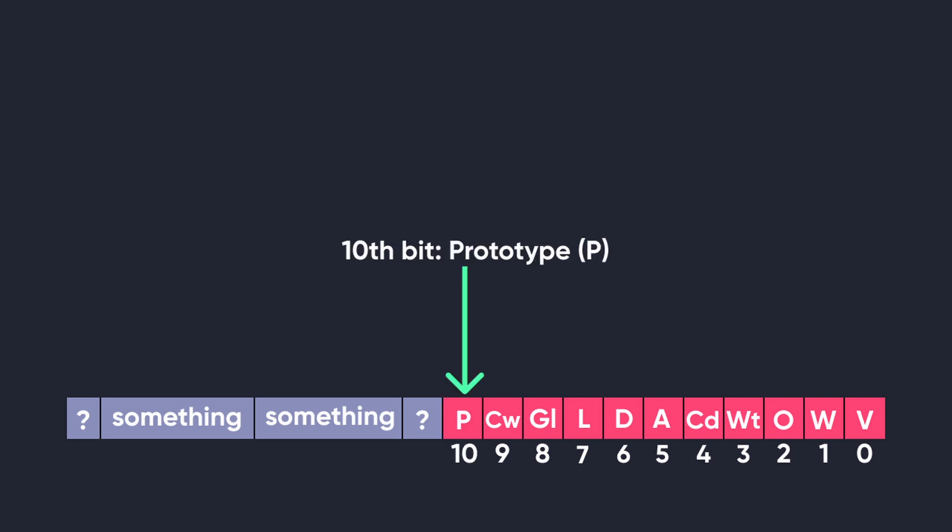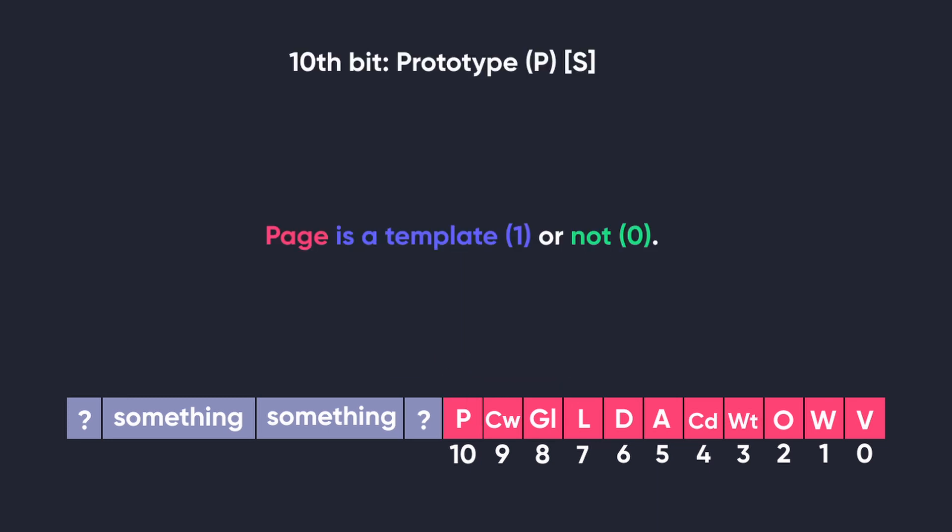The tenth bit is the prototype bit, which is also a software bit. This bit tells the operating system whether to use this page as a template for making other pages. When set to 1, the operating system copies all the properties of this page when creating similar pages, instead of setting all those things manually. If the bit is set to 0, then the page is a normal page.